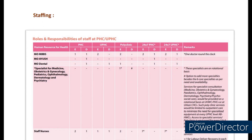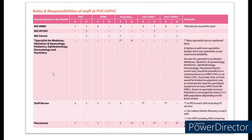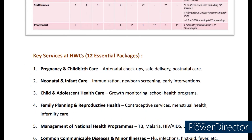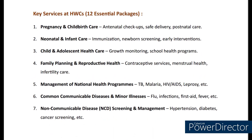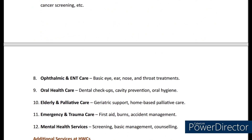Now coming to the staffing pattern, which was recently asked in the UGC exam. They asked about essential staff numbers required for 24/7 PHC. For both 24/7 PHC and 24/7 Urban PHC, the essential staff numbers required is 7. Please go through the other human resources also. The key services provided at HWC are similar to the previous volume — it is a package of 12 services, starting from pregnancy and childbirth care to mental health services. Please go through it.